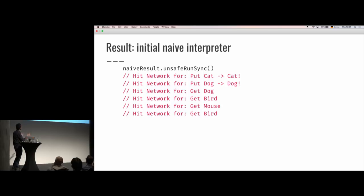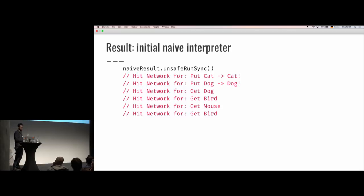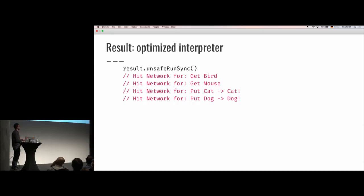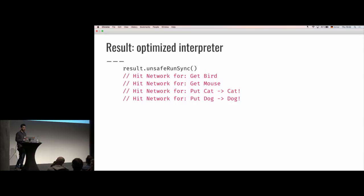Let's put this all together. We have our original interpreter, which is a KVStore of IO. We have a list of gets: dog, bird, mouse, and bird again. This list could be created dynamically so we can't account for duplicates. We also put something into the cat key and the dog key. Using the const extractor to get our info, the naive result hits the network for two puts and four gets — including dog (even though we already know that value) and bird twice. With the optimized result, we only get bird once, mouse once, and perform the two puts. And because all of this runs in parallel, if we have four CPU cores and a sufficiently fast server, this will actually compute six times as fast.